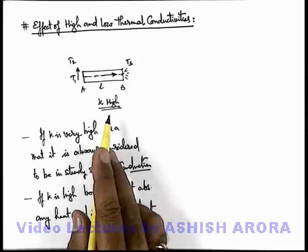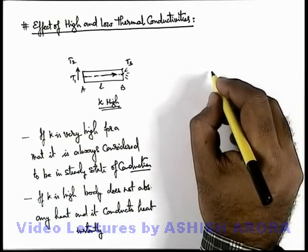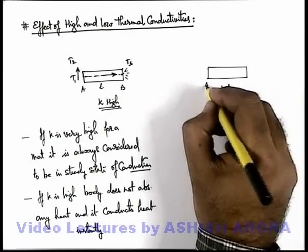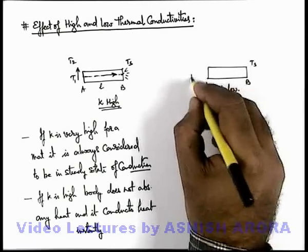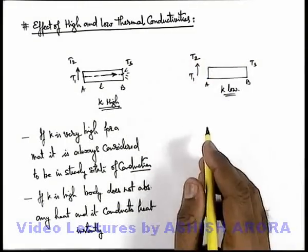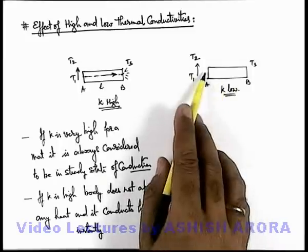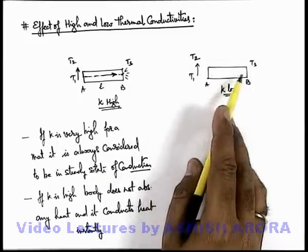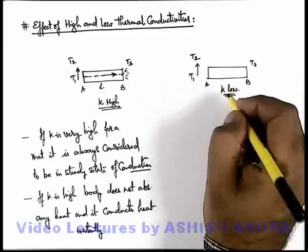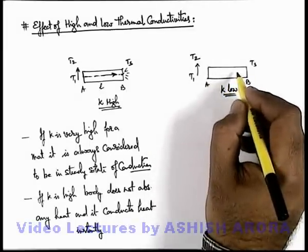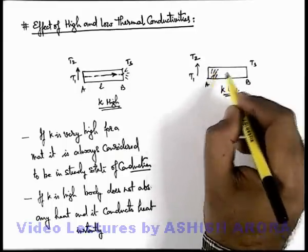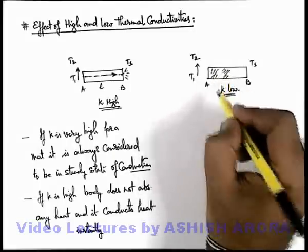Similarly, we can analyze the situation when conductivity is very low for a medium. Say it has a very low value of k, with end A at surrounding temperature and end B at temperature T1. Now if we raise the temperature from T1 to T2, even if it was earlier in steady state, the temperature rise will not instantly increase the rate of heat flow, because when k is low, heat flow takes place gradually — it is not a very good conductor of heat.